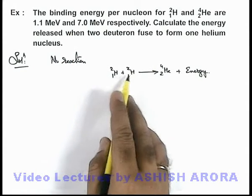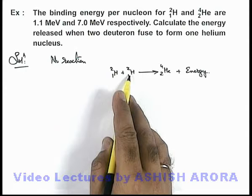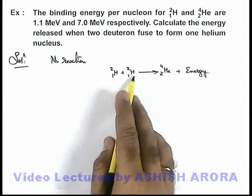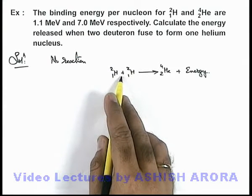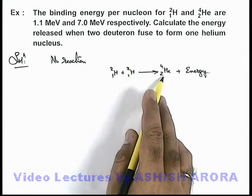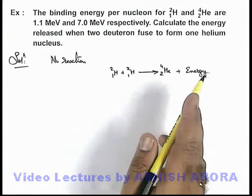The breaking of these two deuterons will require the total binding energy in this situation, and when a helium is produced it will release some binding energy.